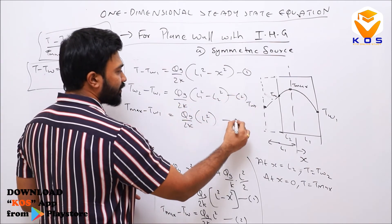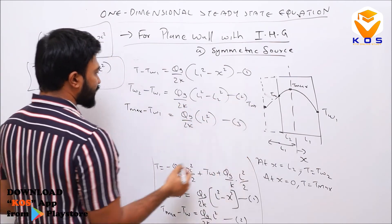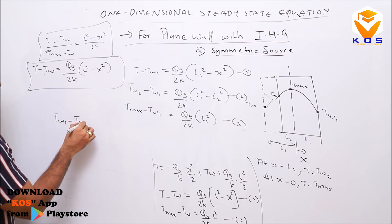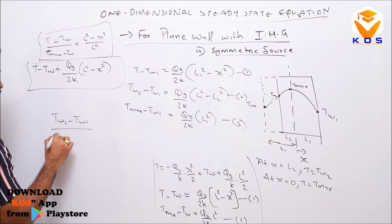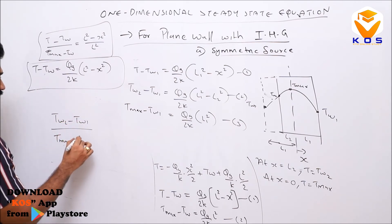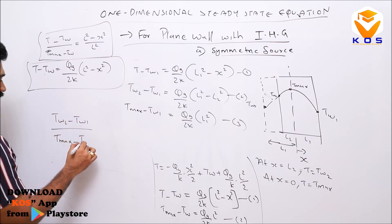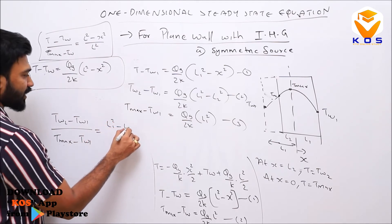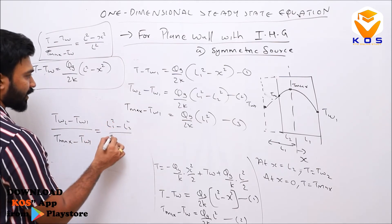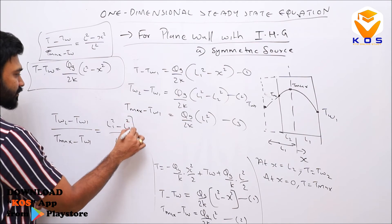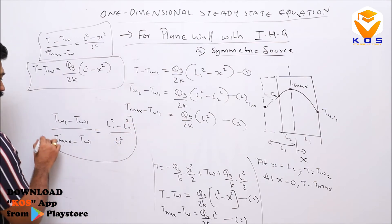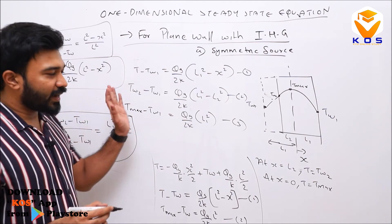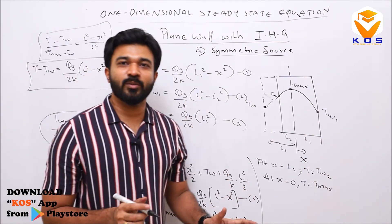Dividing equation 2 by equation 3 gives the asymmetric temperature distribution: (T_w2 − T_w1) / (T_max − T_w1) = (L1² − L2²) / L1².